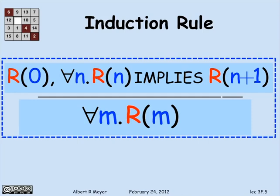Notice that I used n for the variable name above the line in the antecedent, and m for the variable below in the consequent. I can use any names I like for bound variables, just as when you define a procedure you can name the parameters anything you like because they're local variables. I've used m and n just to emphasize that those variables have nothing to do with each other, which is a point that sometimes confuses students.